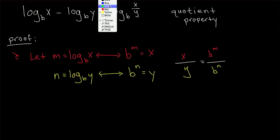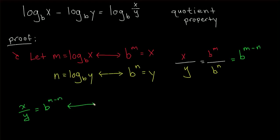Well, we can say that's the same as b to the m minus n. So now we're at x over y equals b to the m minus n. And we're going to convert this exponential equation into a logarithmic equation. We say that log base b of x over y equals m minus n.